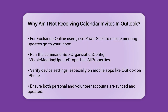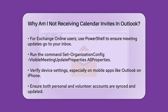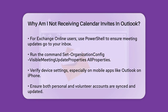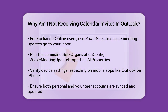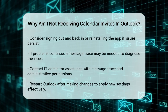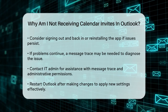If you're still having trouble, it might be related to your device or software. For example, if you're using the Outlook app on your iPhone, make sure both your personal and volunteer accounts are added and enabled for calendar sync. Ensure you have the latest version of the Outlook app on iOS. Sometimes signing out and signing back in, or even reinstalling the app, can resolve the issue.